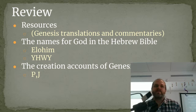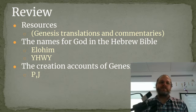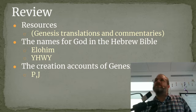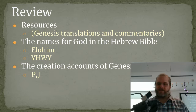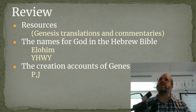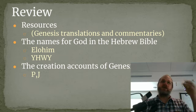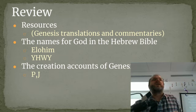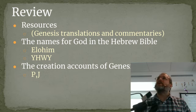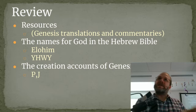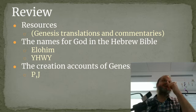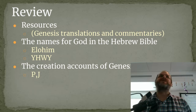Last time, I gave you some resources, specifically Genesis translations and commentaries. We talked about the names of God in the Hebrew Bible, and then we talked about the creation accounts of Genesis — the P and J accounts. Mostly we focused on P's account in Genesis 1, and the J account in Genesis chapter 2 mostly in terms of contrast. We're going to have a whole class on what's called the Documentary Hypothesis. All you need to know for now is that the Bible is divided by scholars into different sources. One is labeled P — a priestly source. The other is labeled J because of his anachronistic use of the name Jehovah.